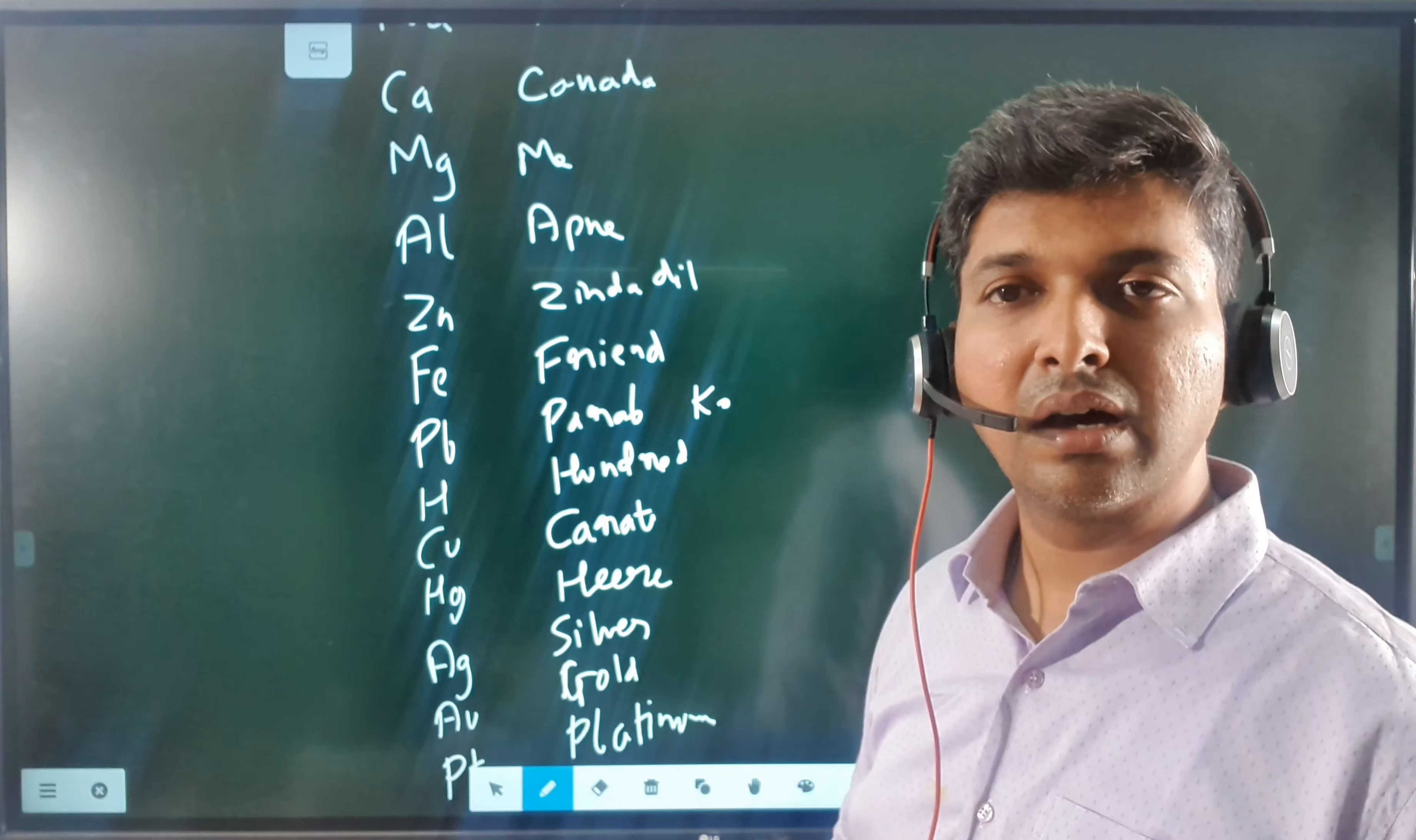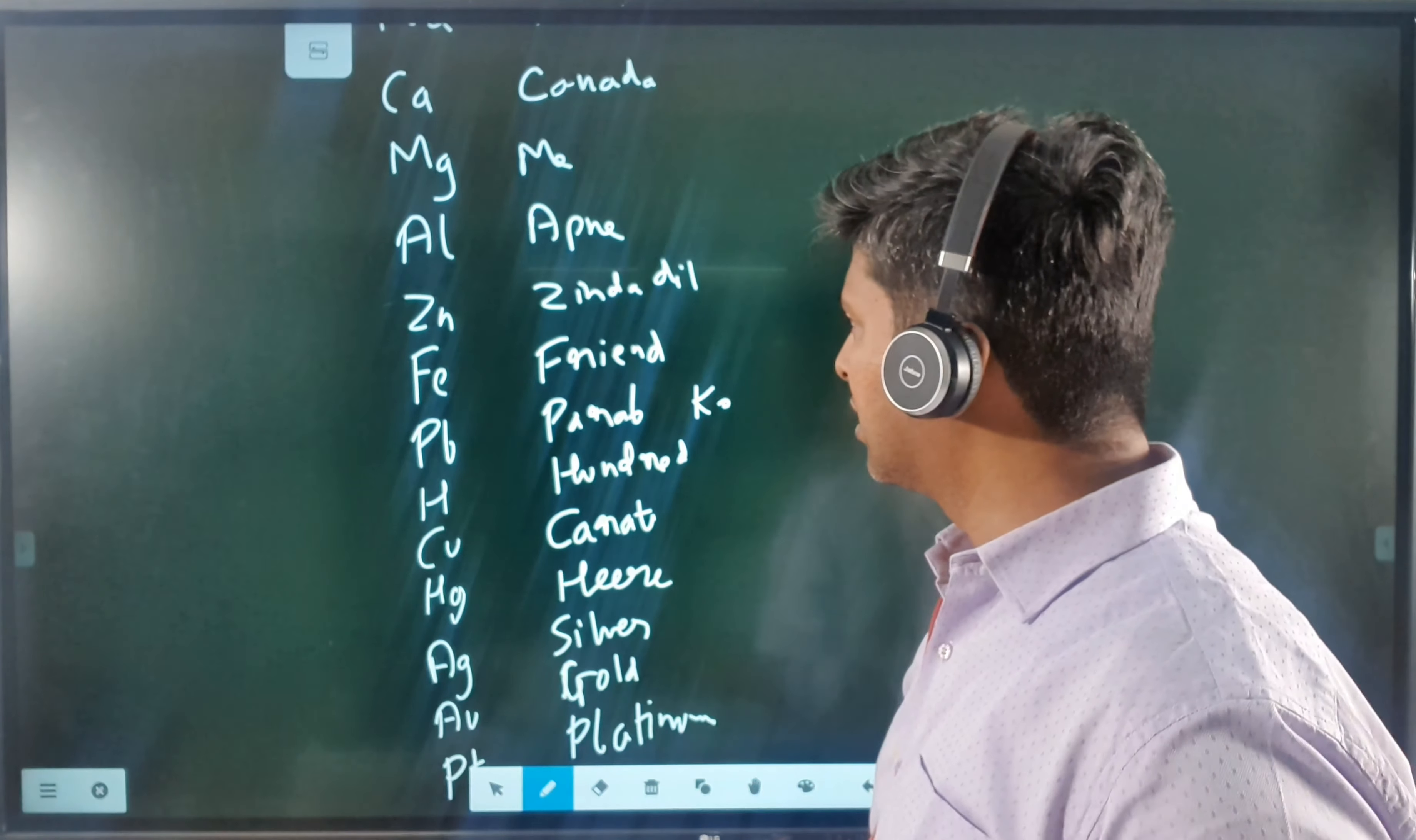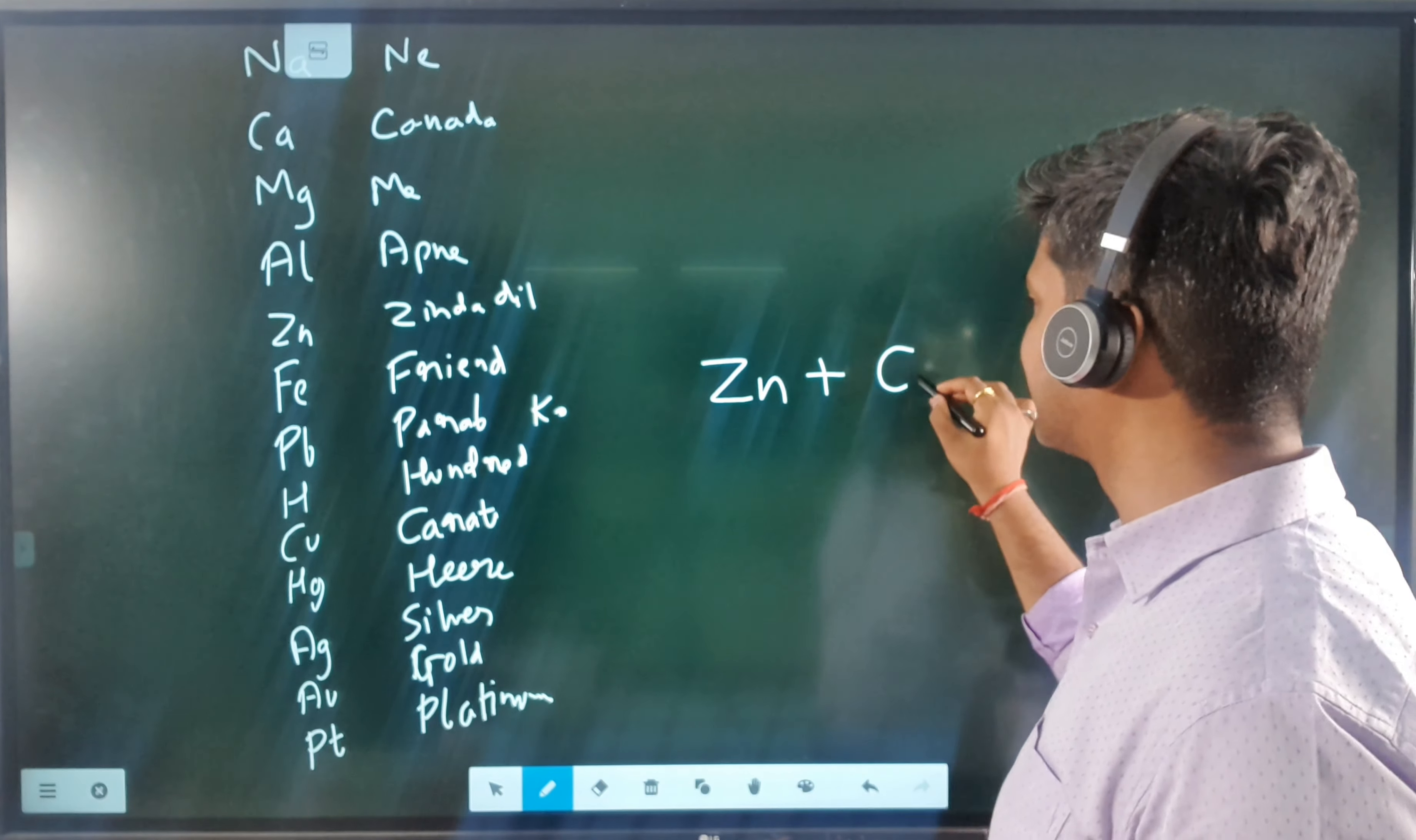Now how does this activity series help you in doing reactions? It can help you in doing reactions quickly. Say for example, zinc is there and copper sulfate is there.